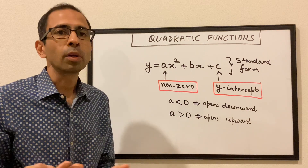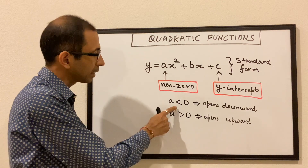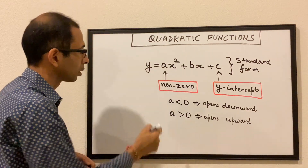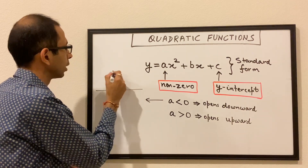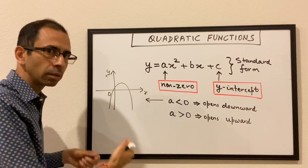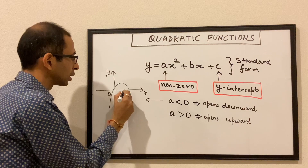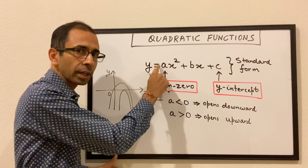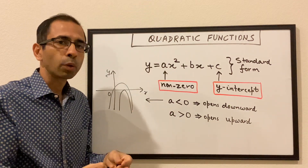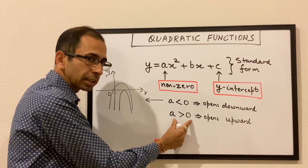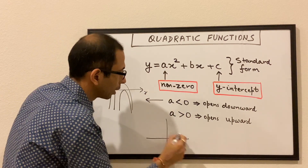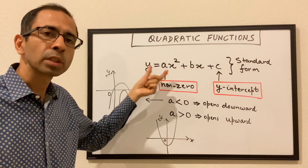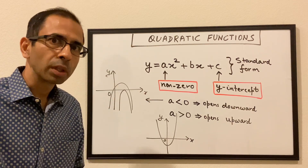Since a cannot be zero, it must be either greater than or less than zero. When a is less than zero (negative), the parabola opens downward — it may cut the x-axis at two points or just touch it at one. When a is greater than zero (positive), the parabola opens upward. So from the standard form, just looking at the sign of a, we can immediately tell the direction the parabola opens.